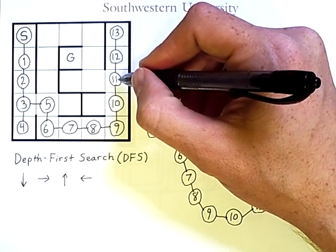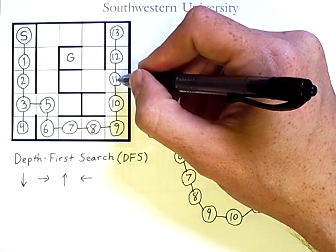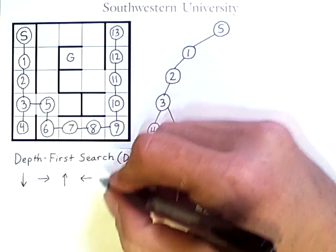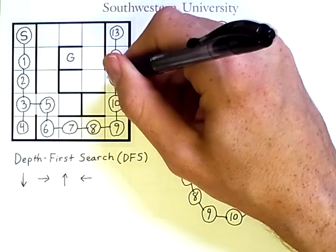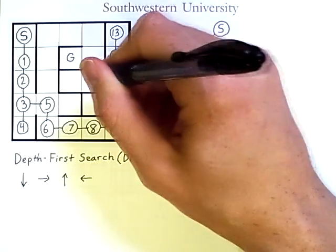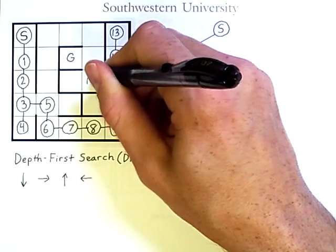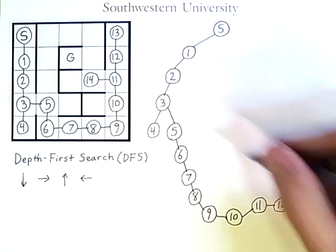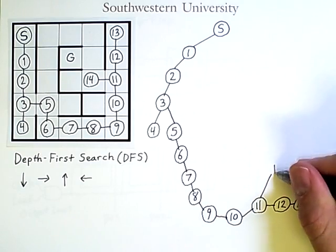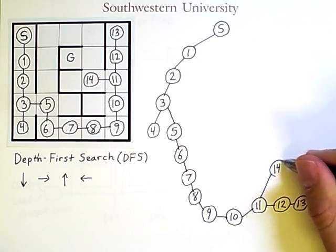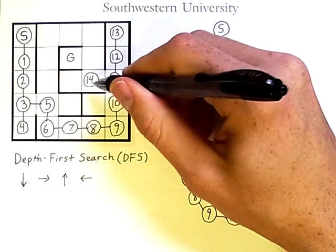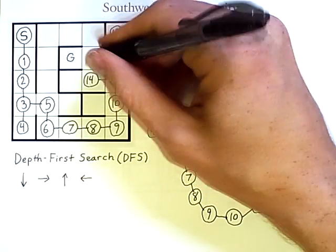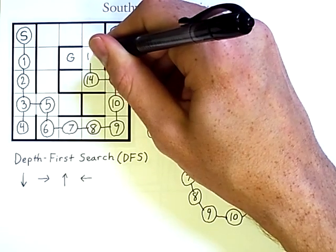From node 11, having already tried down, right, and up, we finally consider the last option: going left. This becomes the 14th node we search. From node 14, down is a wall, right is already visited, and up takes us to node 15.